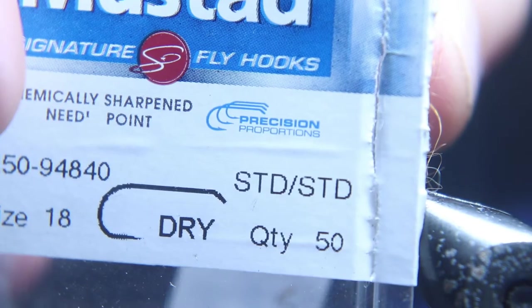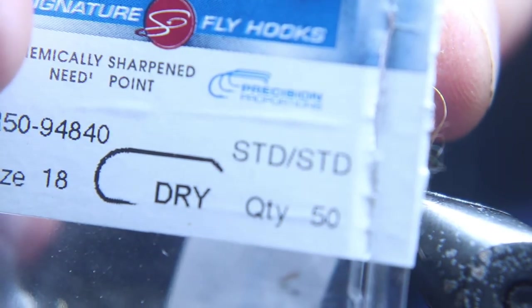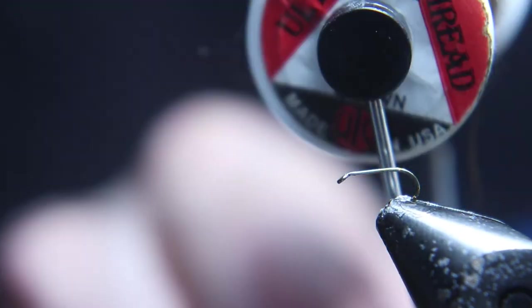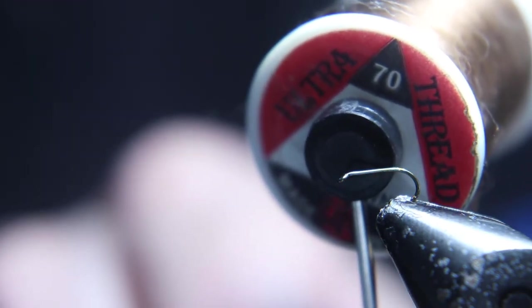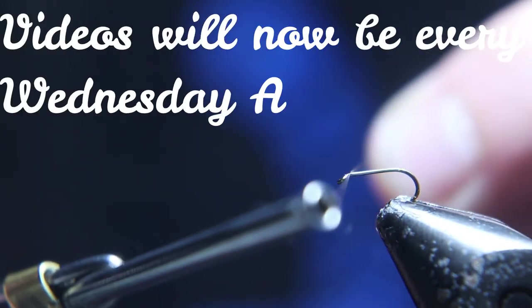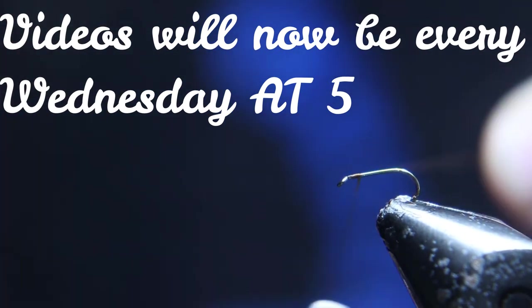This fly we're going to start with a size 18 dry fly hook, and we're going to use 70 denier brown for the thread. Go very lightly on the thread wraps you use at this part of the fly, but you want to add just a couple thread wraps right up by the eye of the hook.